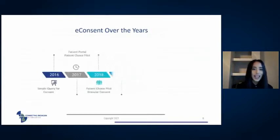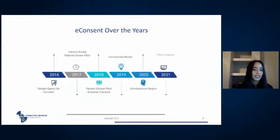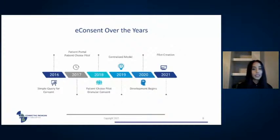Here is a simple timeline of how MiHIN's e-consent project has evolved from 2016 until present day. In reality we have been working on e-consent for many years, taking in an abundance of feedback to get to the product we have today. The product has really developed from a simple query, to a portal, to a granular portal, to our newly centralized model. We're going to go into each of these in more detail over the next half hour.